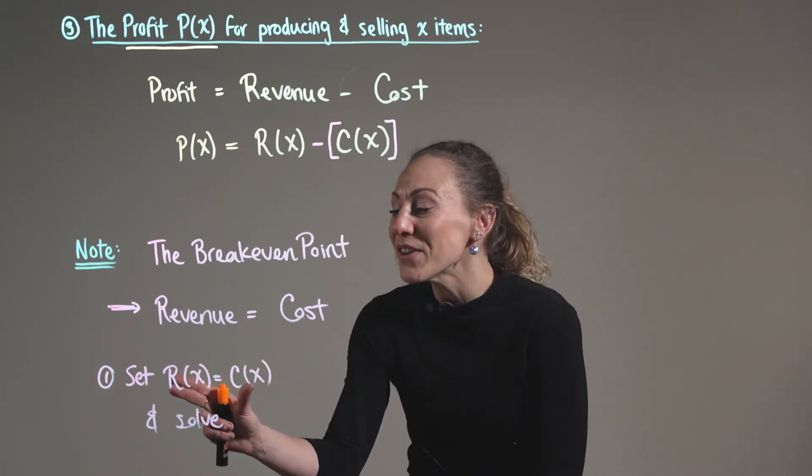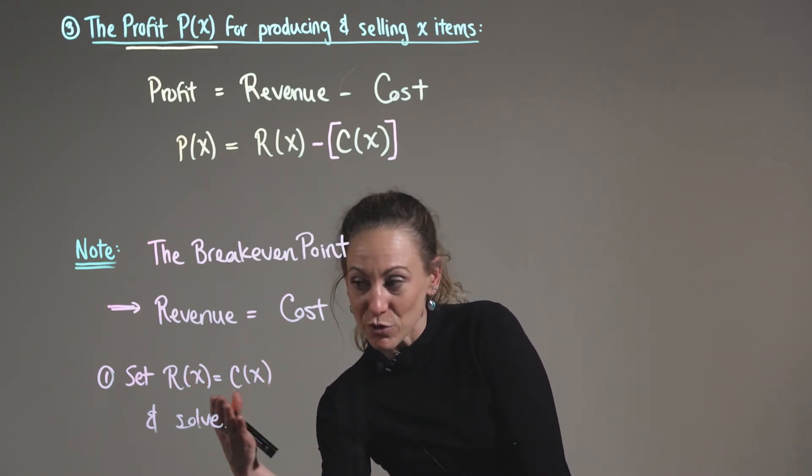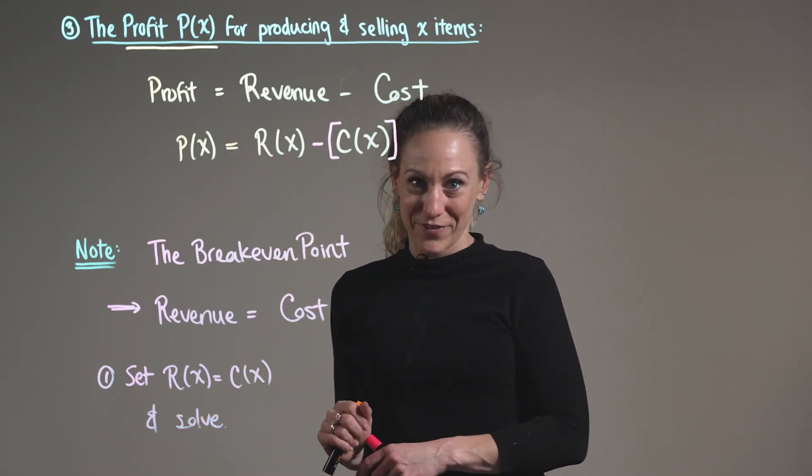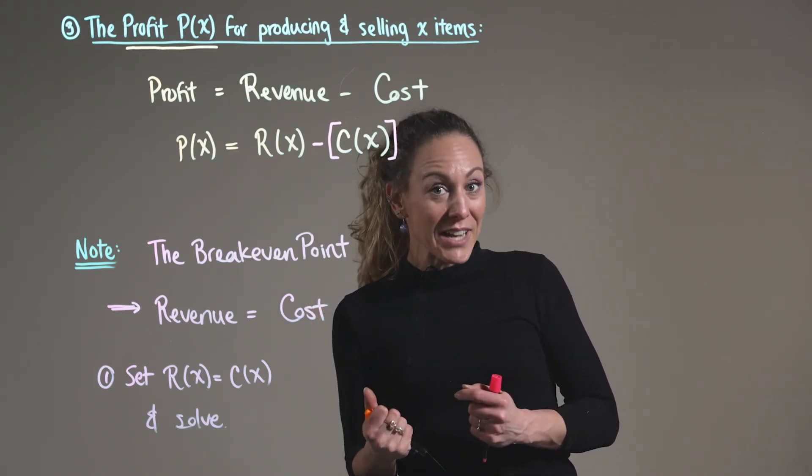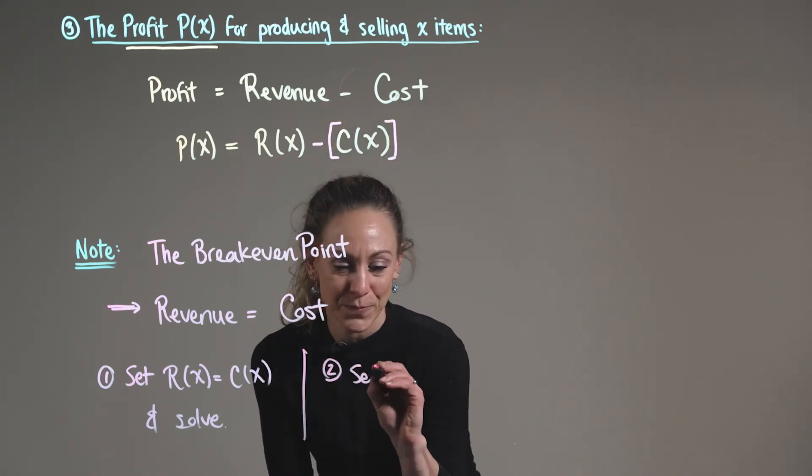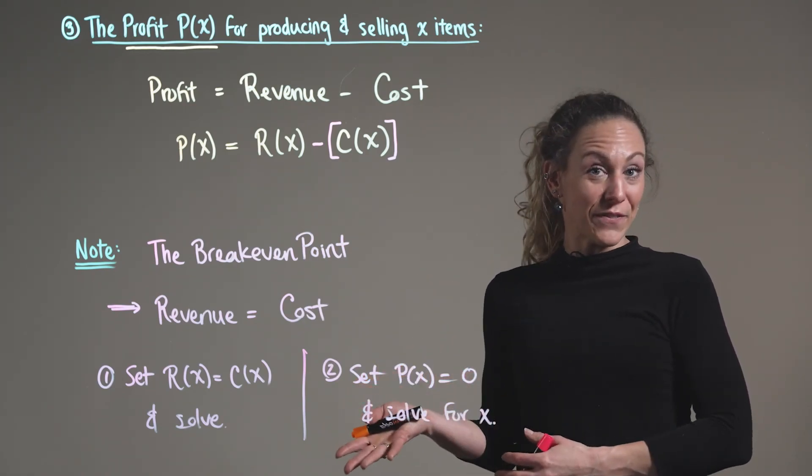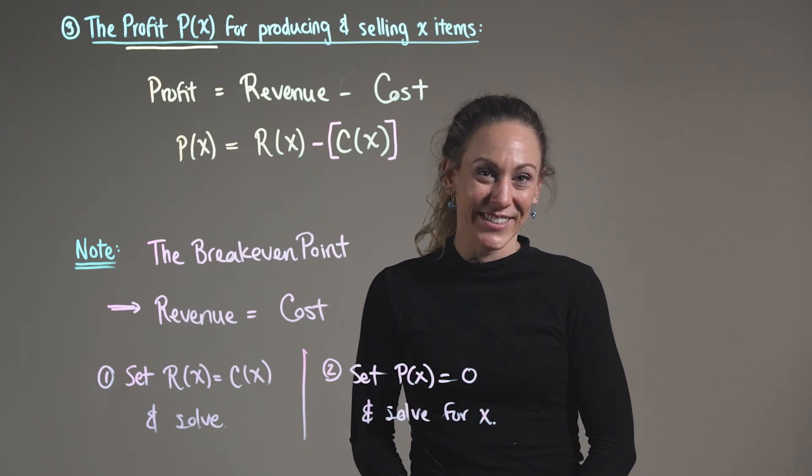But notice, if we look at setting revenue equal to cost, if we were to subtract costs from both sides, we would end back up at our profit function. So an alternative and equivalent way to find this break-even point is to set the profit function equal to zero and then solve for x.